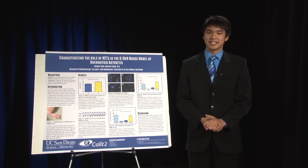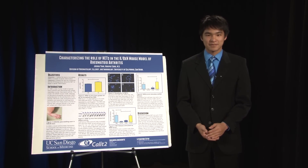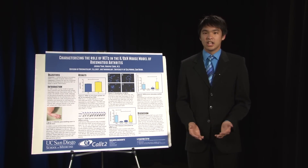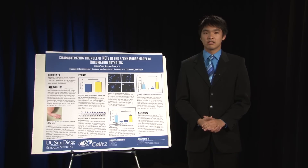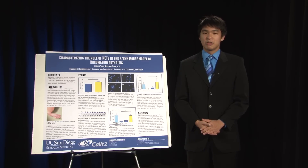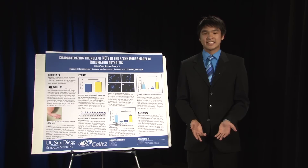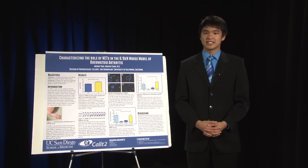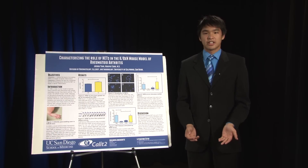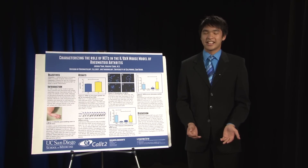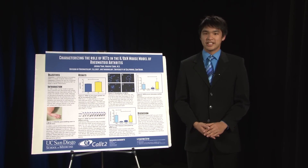Sterile inflammation is inflammation without a pathogenic source. For our model of sterile inflammation, we use a mouse model of rheumatoid arthritis. Rheumatoid arthritis is a disease that affects millions of Americans, and arthritis is a leading cause of disability. Rheumatoid arthritis is an autoimmune disorder and is characterized by bone erosion and cartilage degradation.